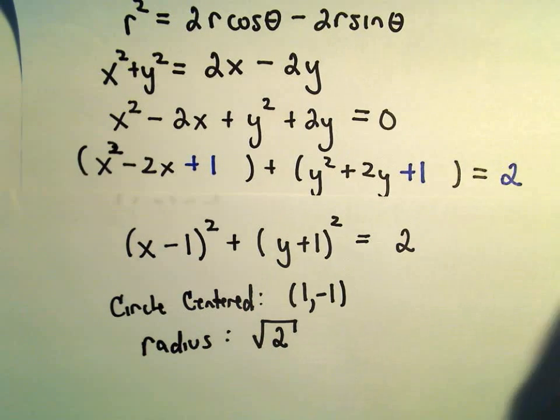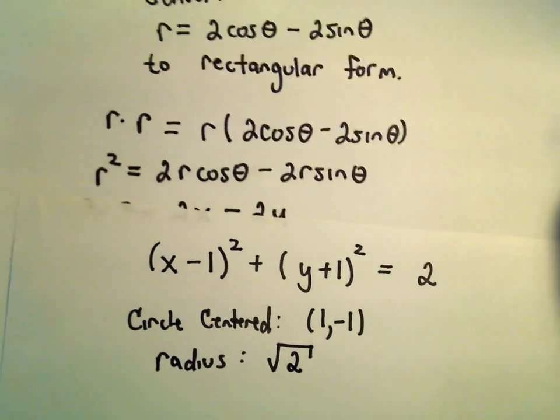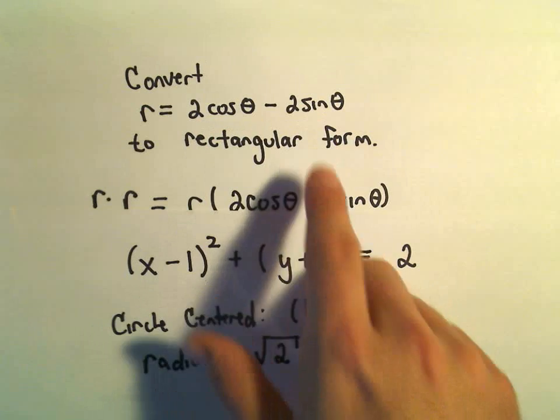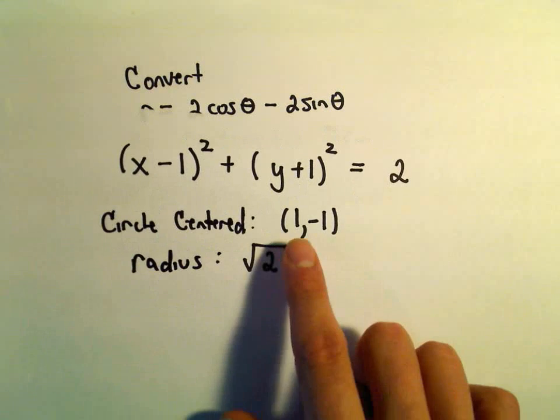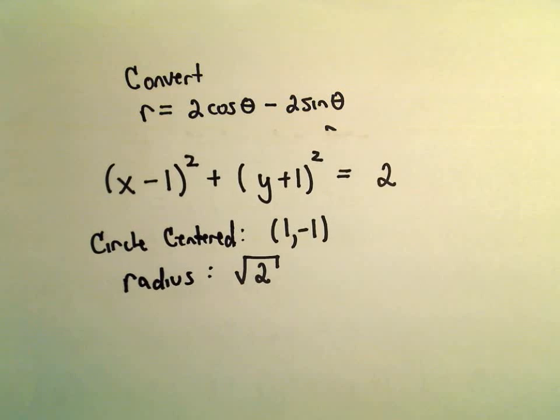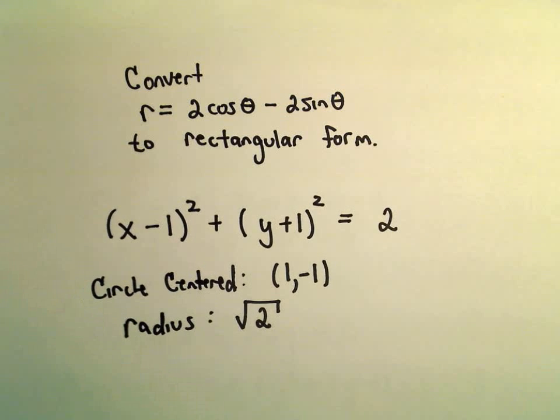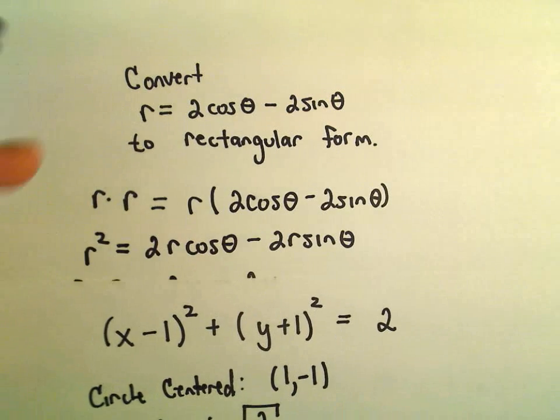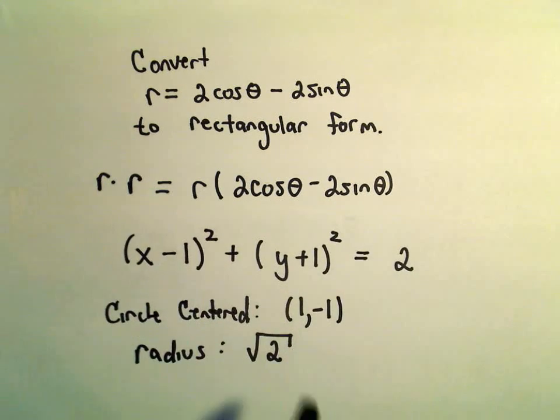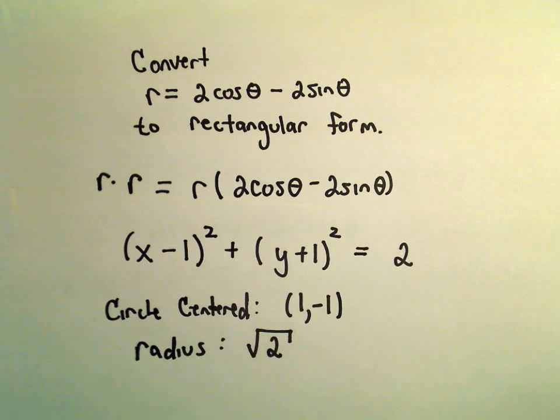So actually, we could even go back and graph this original equation. Just looking at that, I wouldn't look at that and say clearly that's a circle centered at 1, negative 1 with radius of square root of 2. Maybe you would. I wouldn't. But so this is kind of the common trick. Turn it back into x, y coordinates. And then hopefully it'll be something that you recognize.